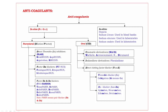Let us discuss parenteral in vivo anticoagulants. These are divided into three subgroups. The mnemonic is 'Dilution Factor' — bold letters are D, F, F. D means direct thrombin inhibitors. First F means factor 10A blockers. Second F means factor 2A and 10A blockers.